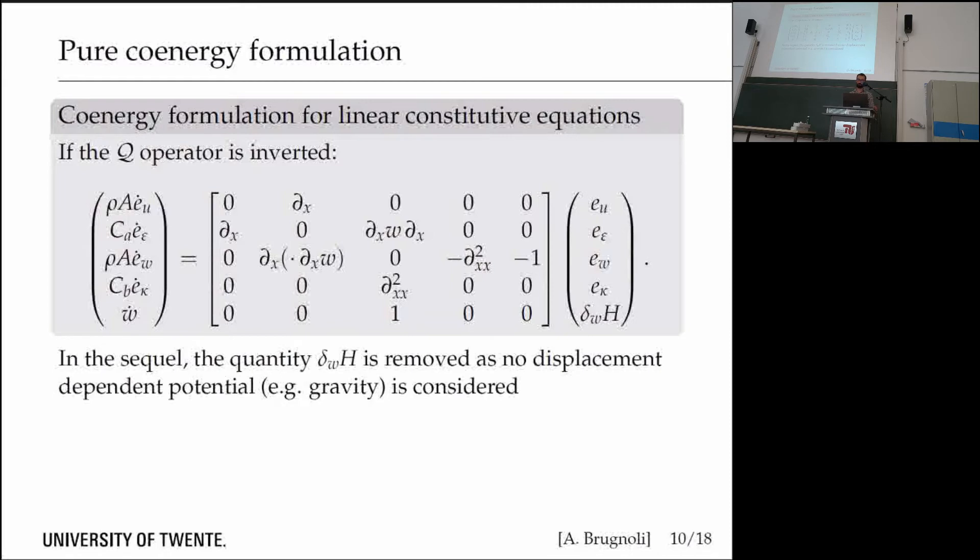I move this Q operator on the left-hand side. It becomes a mass matrix. In the sequel, I will remove this variational derivative with respect to W because there is no gravity potential. Then we have this interconnection operator that is linear in some parts, and then this coupling between membrane and bending behavior.